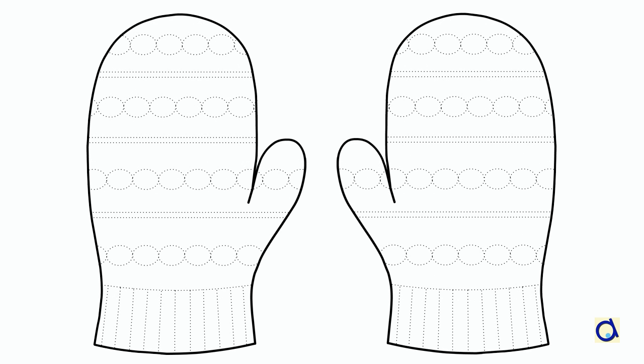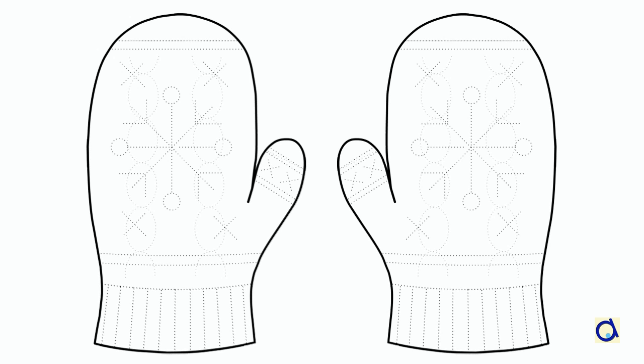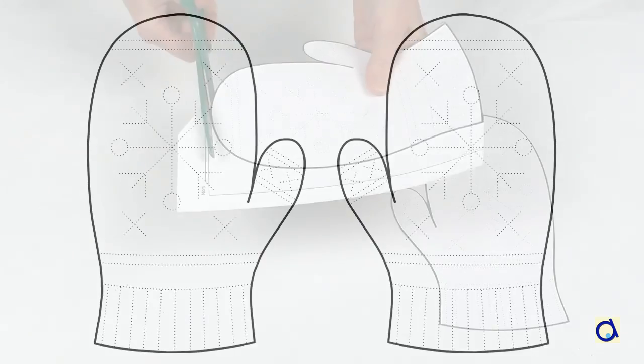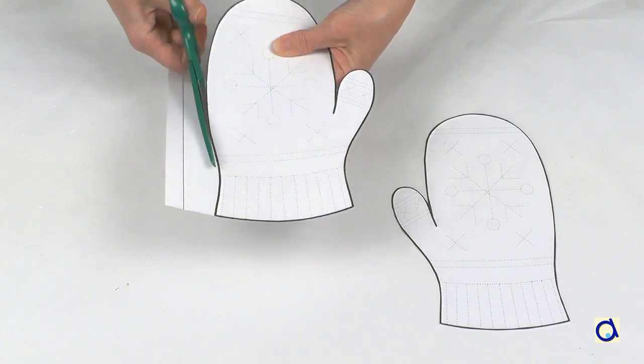Here is one way to use the large mitten patterns. If you want to make a complete mitten as in the first example, print both sides of the mitten. Print the mitten patterns on white construction paper. Then, cut out the mitten shapes.